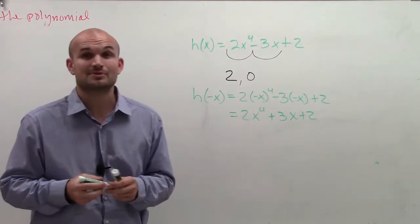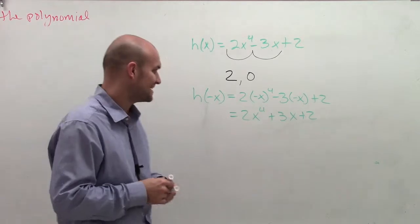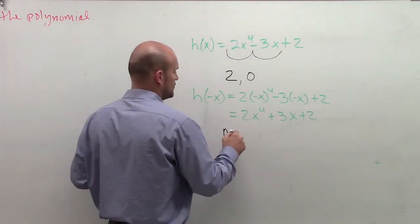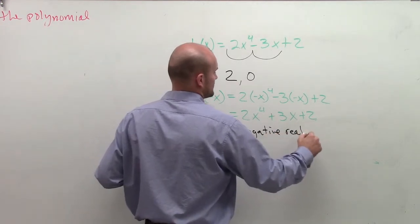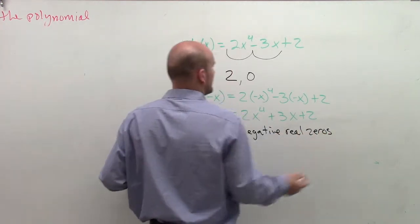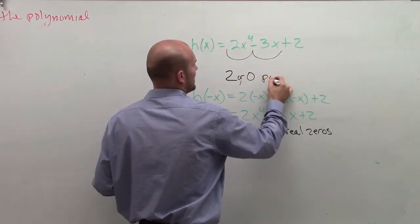Here what we notice is there's absolutely no variations in the sign. So therefore there's no negative real zeros. And so there's two or zero positive zeros.